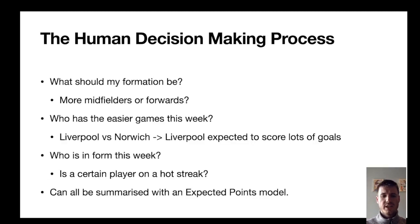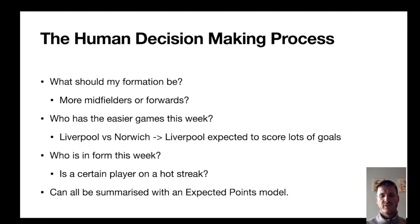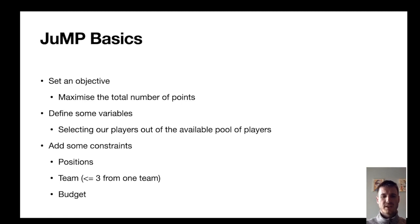What goes into the human decision-making process? You think about formation, who has easier games that week — for example, if Liverpool play Norwich you'd want Liverpool players — and who is in form. But all of this can be summarised with an expected points model that you can build yourself or download from the internet. We're going to input those expected points into JuMP to maximise the total number of points as our objective, defining variables for player selection and constraining them based on positions, teams, and budget.